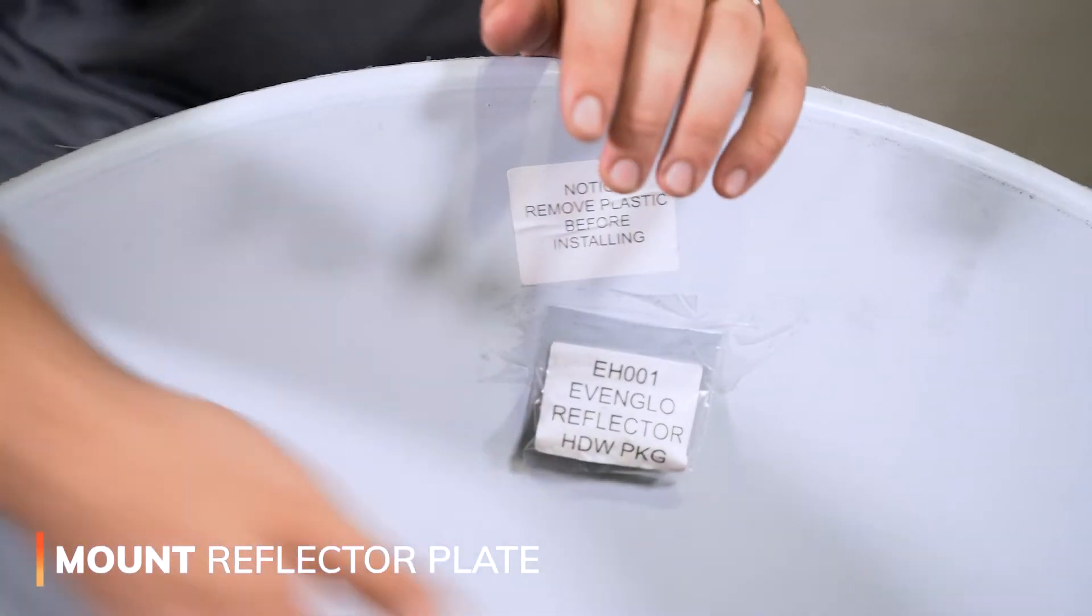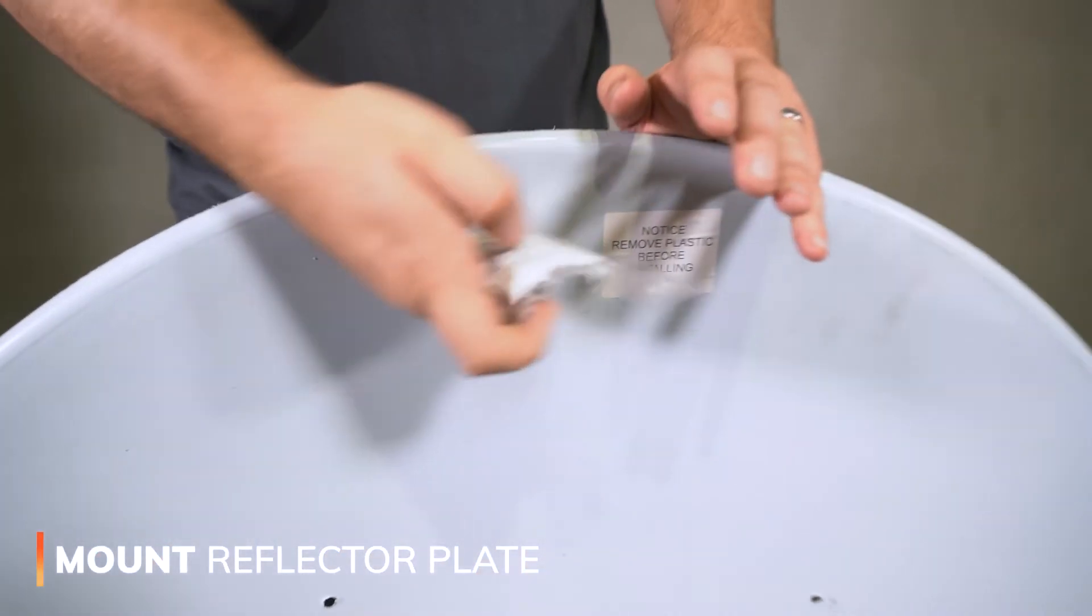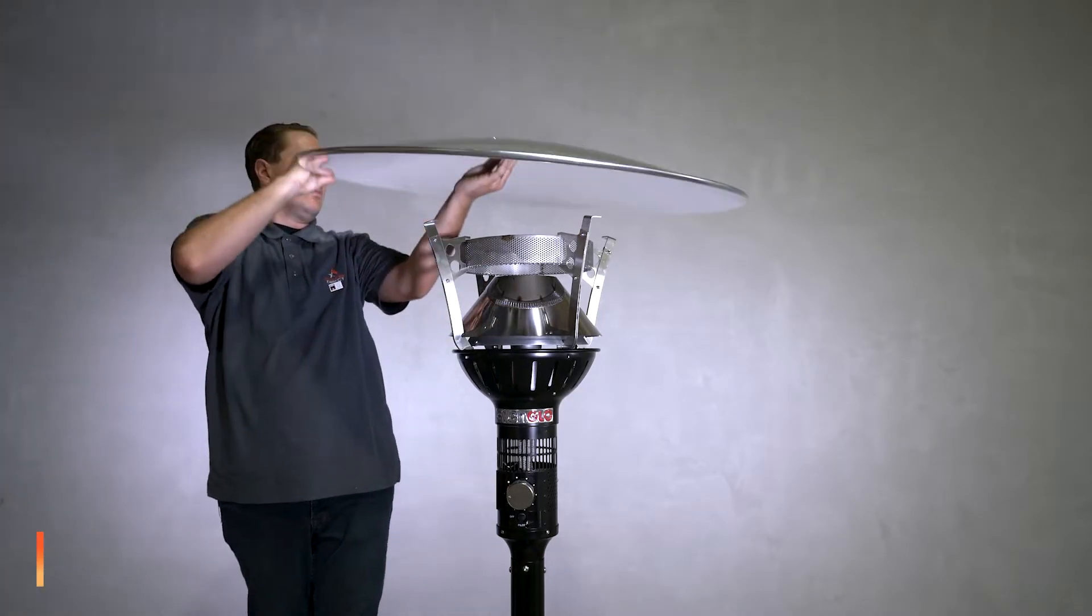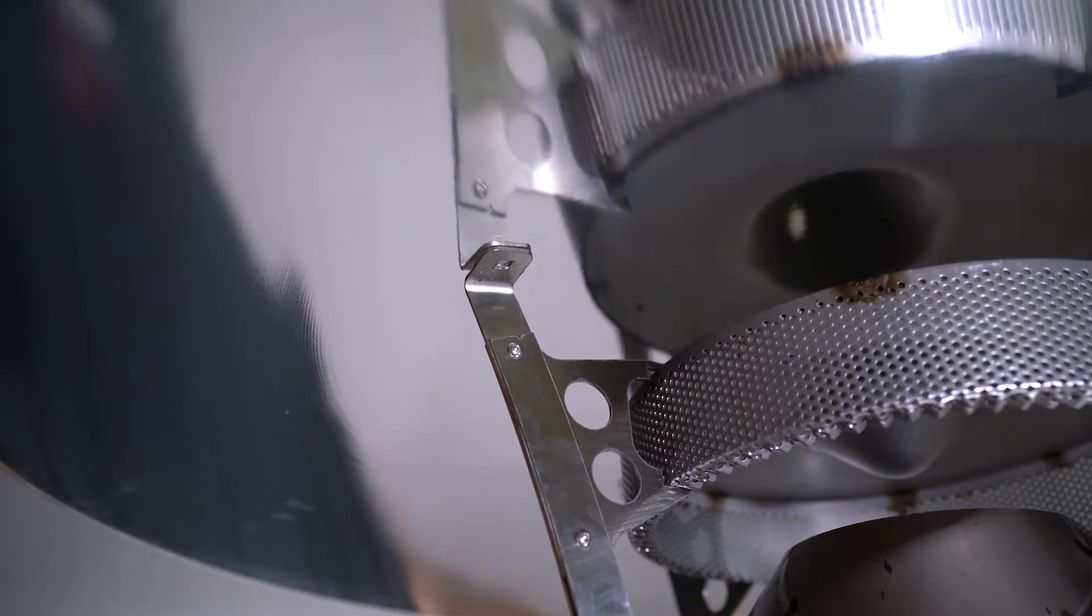Next, we're going to grab our reflector plate, remove the hardware, and tear off the protective plastic. Once we remove the plastic, we'll place the reflector on top of the heater head assembly, aligning the mounting holes and securing them in place.